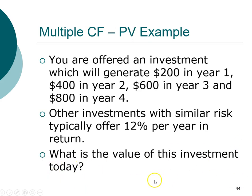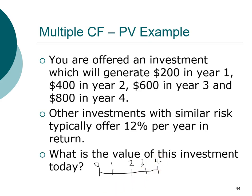To approach this problem, let's put the cash flows on a timeline. The investment horizon lasts a total of four years. In year one we expect to generate $200, in year two $400, in year three $600, and in year four $800. The interest rate is 12%. That's the basic information we need to solve this problem.